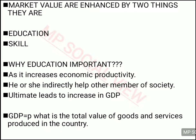GDP means Gross Domestic Product — it is the total value of goods and services produced in the country during a year. Whatever goods and services are produced in the country, the total value of those is added together and the GDP of the country is estimated.